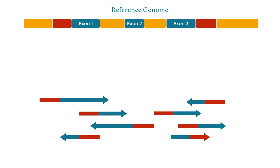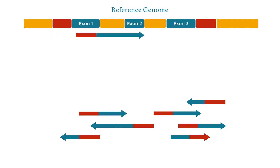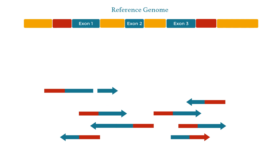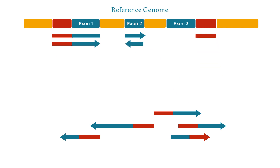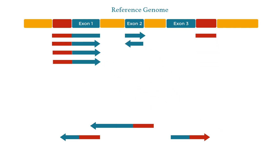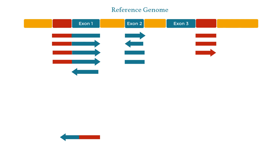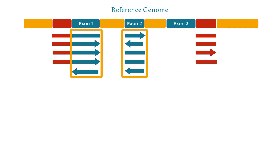The problem is that some reads don't map exactly to the reference genome because they're missing the sequences that were spliced out. So in order for them to map, they need to be split. When many reads spanning this gene are split and aligned, we can clearly see that only the first and second exons are being expressed, which makes sense because the third exon was spliced out of the pre-mRNA.